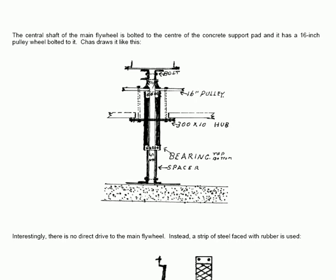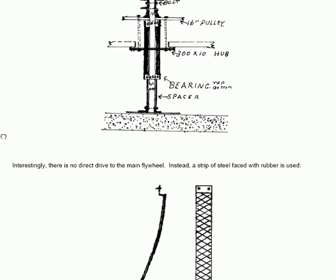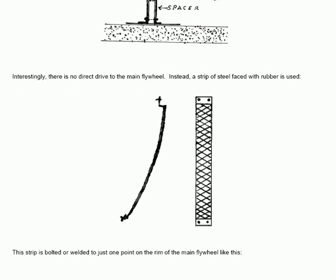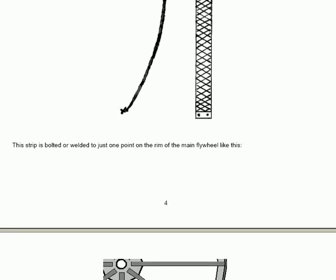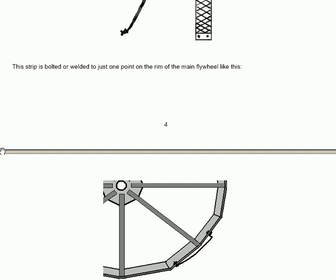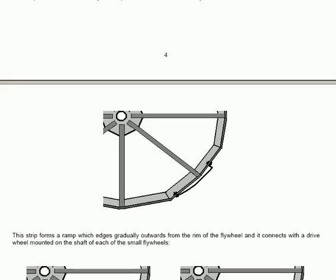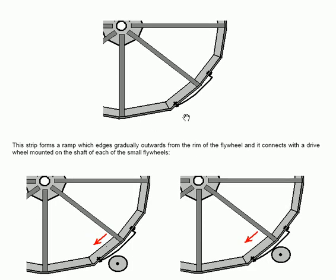Interestingly, there is no direct drive to the main flywheel at all. Instead, a strip of steel faced with rubber is used to create the drive. The strip is bolted or welded to just one point on the rim of the main flywheel. That is, one point on the outside of the flywheel gets this unusual strip arrangement here, which forms a rising surface to a surface then that is parallel to the actual rim of the flywheel. This strip forms a ramp.